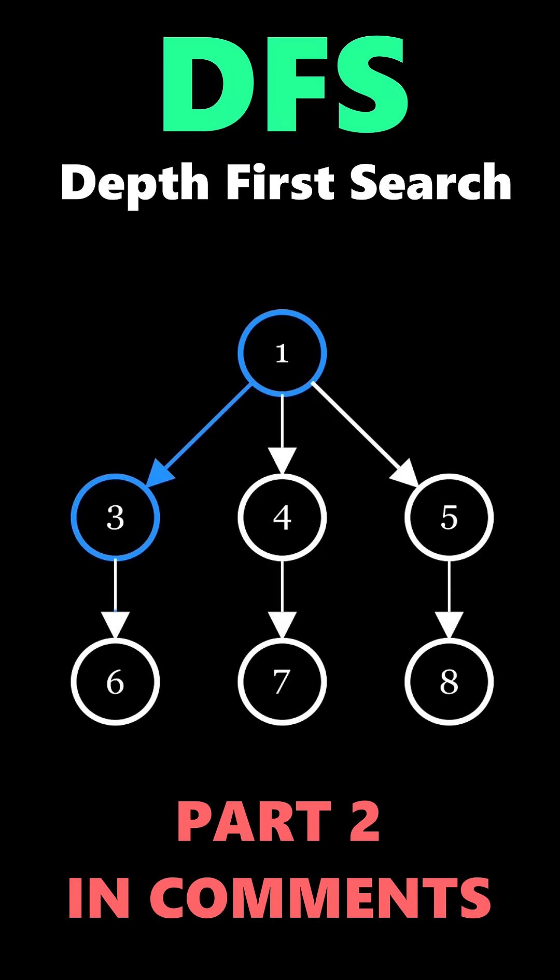As you can see, 3 only has one edge going outward. So we take that edge and move to Node 6. It now starts to become apparent in the visuals.